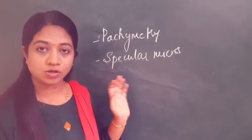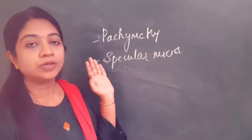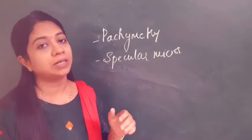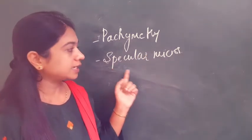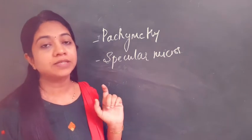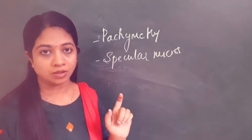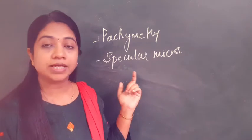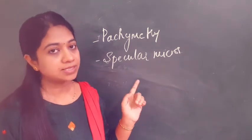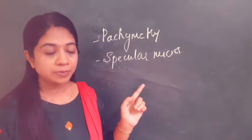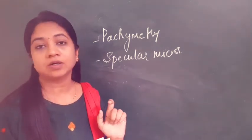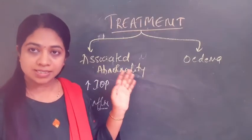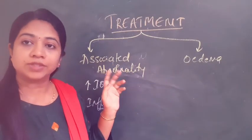After slit lamp examination, you can use pachymetry to know the corneal thickness, which helps in monitoring the patient. Specular microscopy gives the endothelial cell count, providing a clue to the cause and prognosis. If the endothelial count is less than 700 cells per square millimeter, it is a critical stage where corneal decompensation will occur.